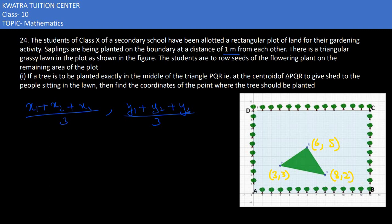Now we substitute all values. 3 plus 8 plus 6 divided by 3. Y1 plus Y2 plus Y3 is 3 plus 2 plus 5 divided by 3. 3 plus 6 is 9, 9 plus 8 is 17, so 17 over 3 is the X coordinate.